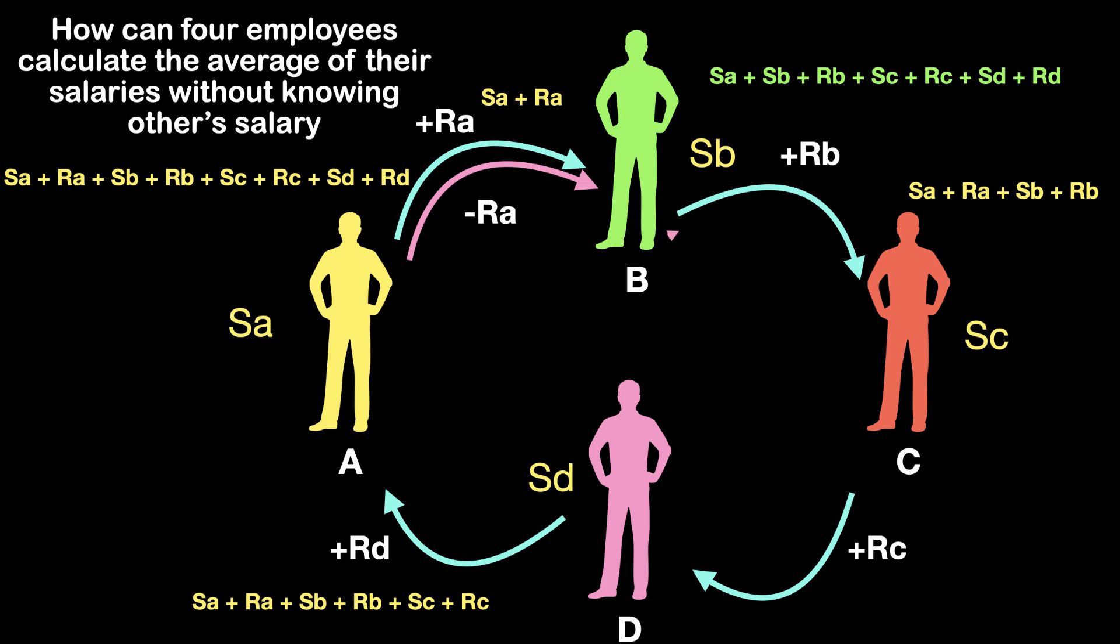In the next step, B subtracts his random amount and gives the final figure to C without showing it to A. C will receive the figure Sa plus Sb plus Sc plus Rc plus Sd plus Rd.